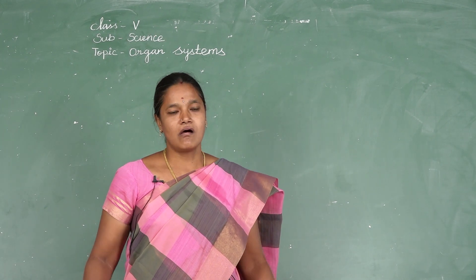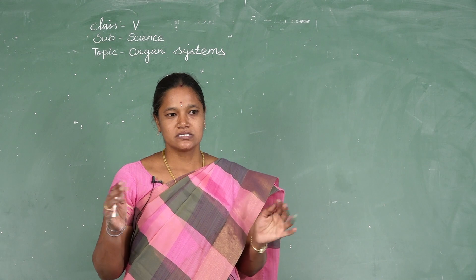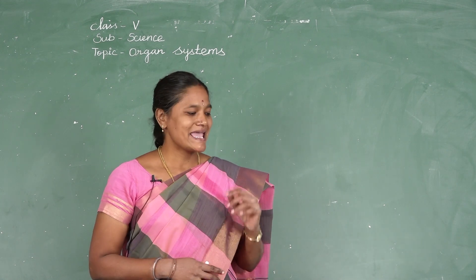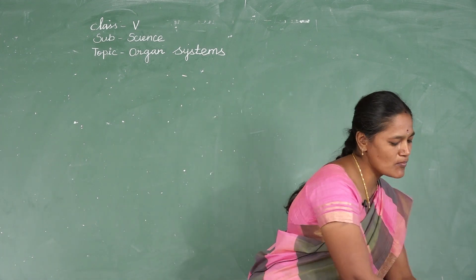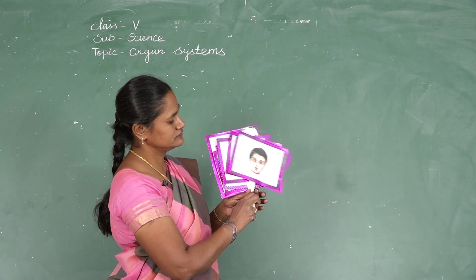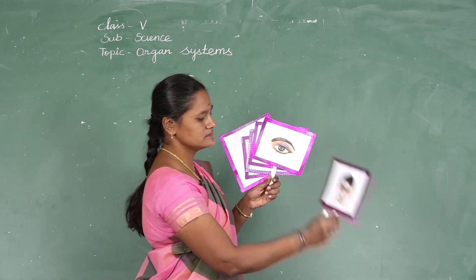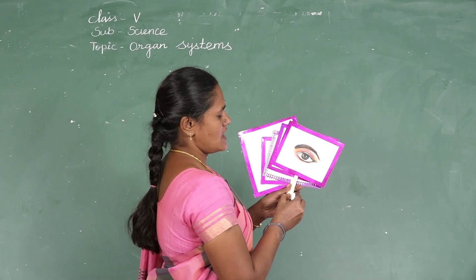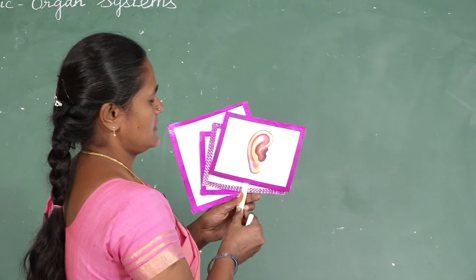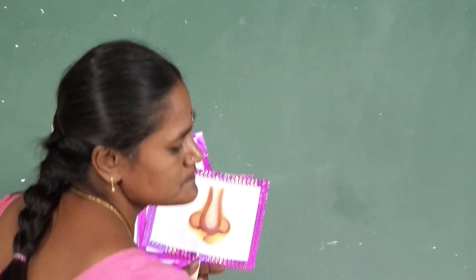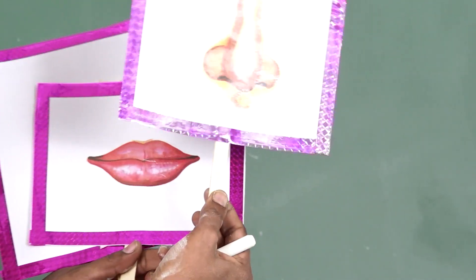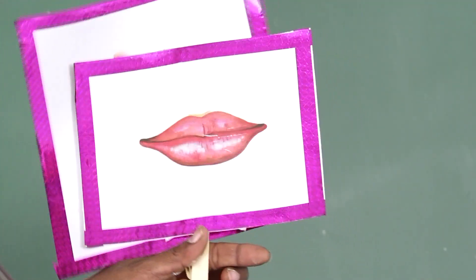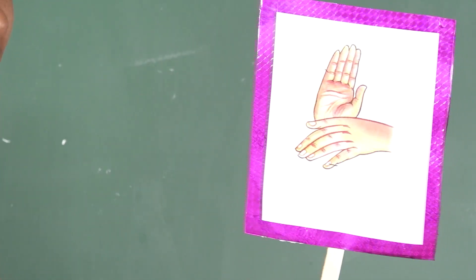Some parts are on the outside of the body. Such parts are called the external organs. Some examples of external organs are: head, eyes, ears, nose, lips, and fingers. These are the external organs.